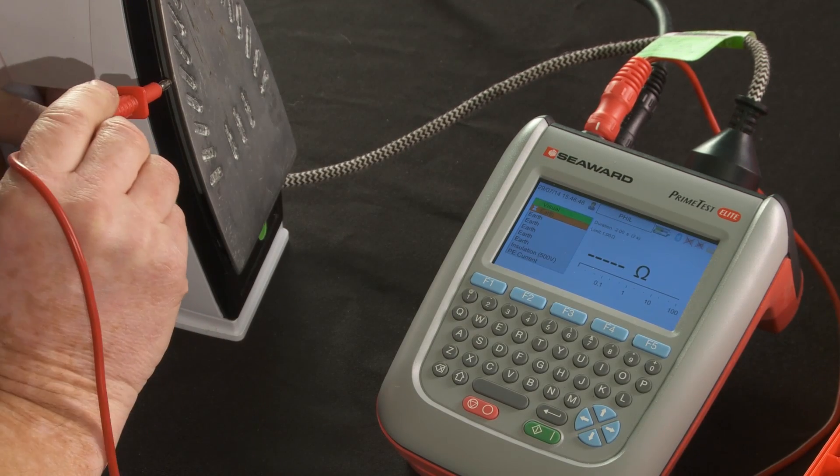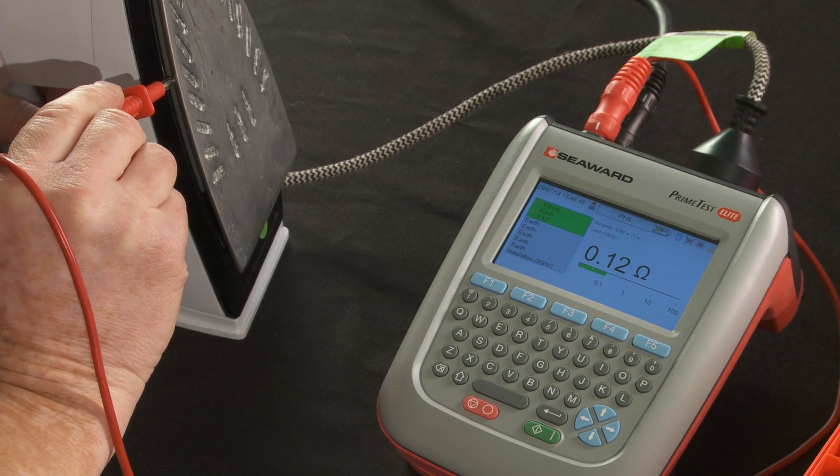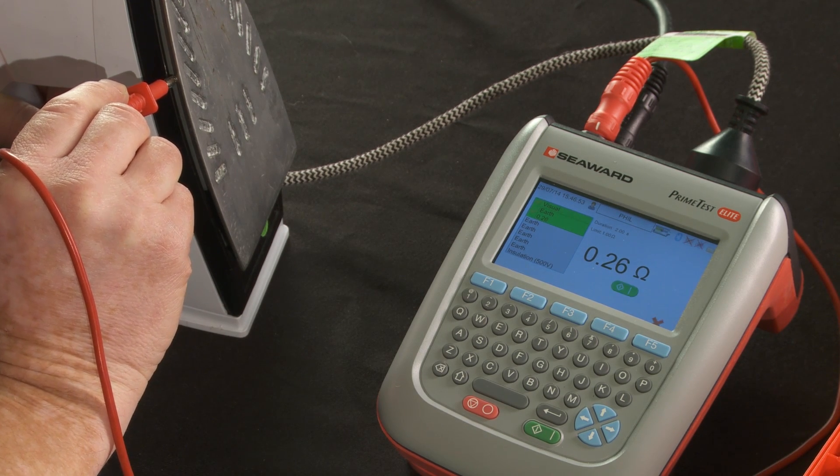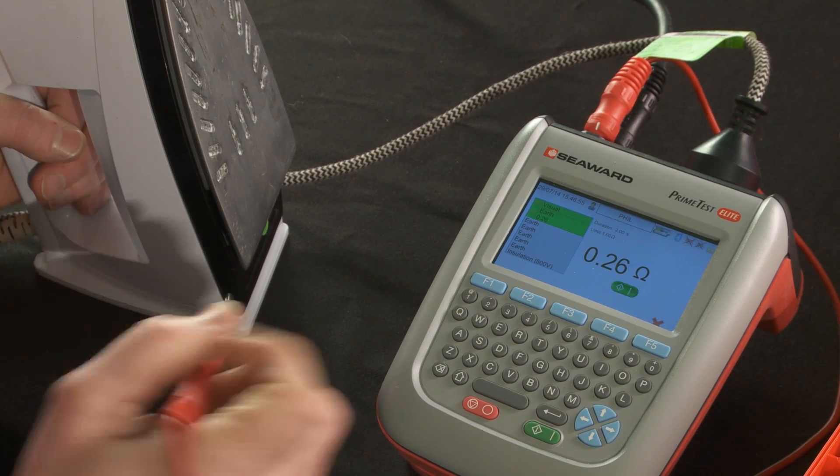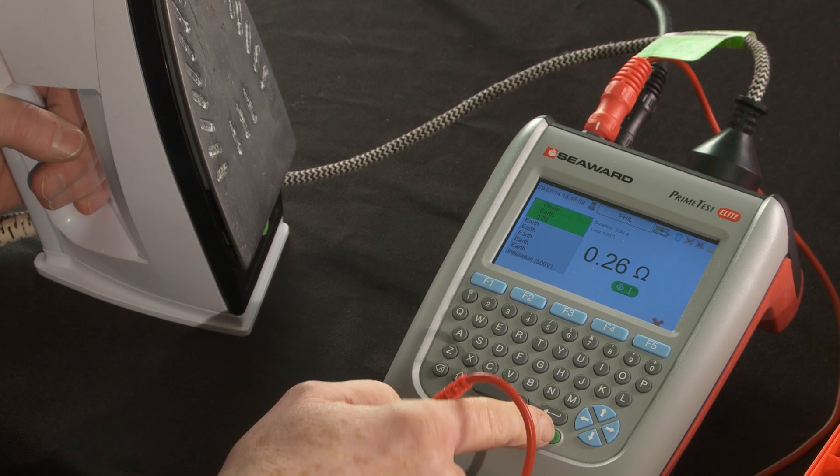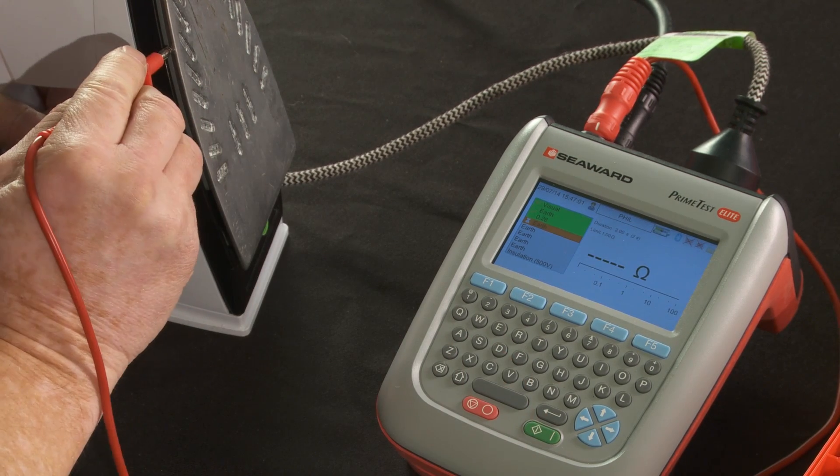Now we're doing the earth test. Let's record a result of 0.08, 0.26. Okay, so if I wanted to run that test again, I can, by pushing the green button.